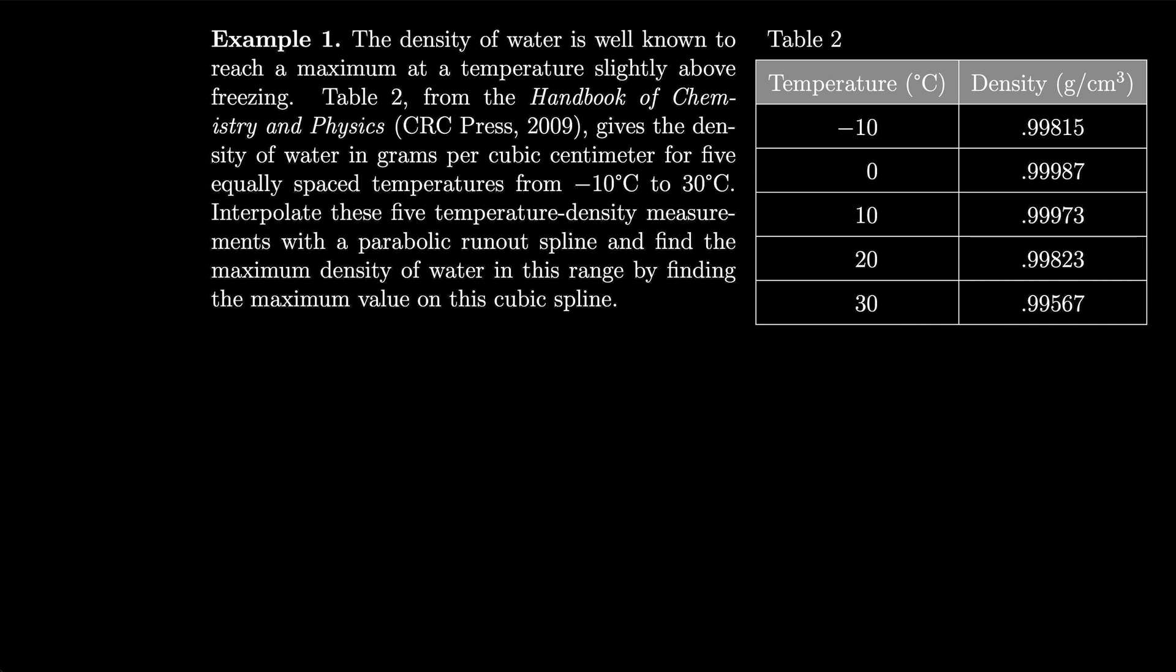First, let's list our x values. So we have that x1 is -10, giving us a y1 of 0.99815. Our x2 will be 0, giving us a y2 of 0.99987. Then x3 is 10, y3 is 0.99973, x4 is 20, y4 is 0.99823, x5 is 30, and y5 is 0.99567.